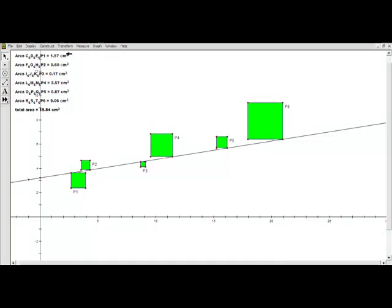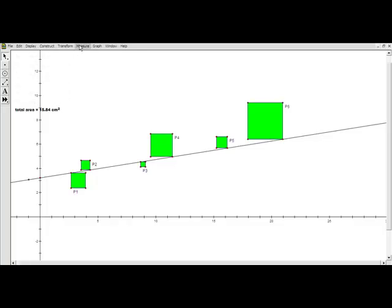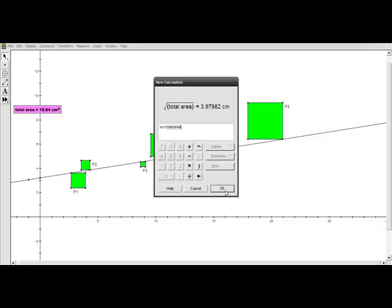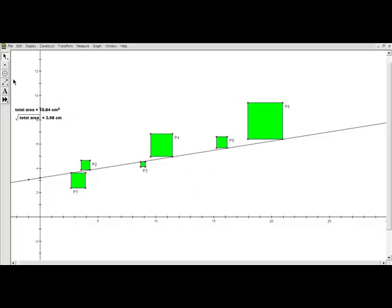If we take this total area and take the square root of it, that would give us the side length which would make this total area in a square. So we can do kind of what we did before.